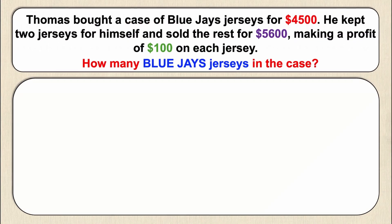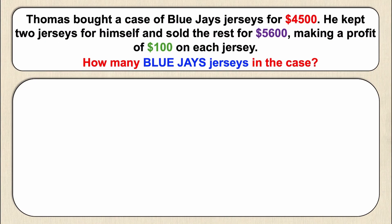In front of us we've got a problem. Thomas bought a case of Blue Jays jerseys for four thousand five hundred dollars. He kept two jerseys for himself and sold the rest for five thousand six hundred dollars, making a profit of one hundred dollars on each jersey. The question is: how many Blue Jays jerseys were in the case that Thomas bought?